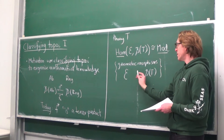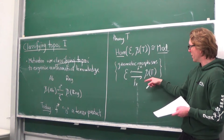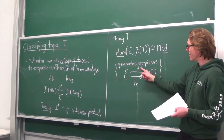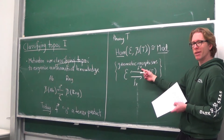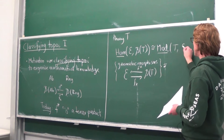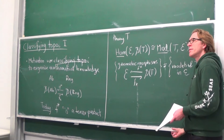A geometric morphism between topoi is a pair of adjoint functors: the left adjoint part is typically denoted f* and the right adjoint part f_*, following the convention in geometry. A geometric morphism is such a pair where the left adjoint part preserves finite limits — notice that since it has a right adjoint it preserves all colimits, but there's no reason for it to preserve any particular limits, so that's really a condition. The right-hand side of the equivalence is models of the theory T in the topos E.